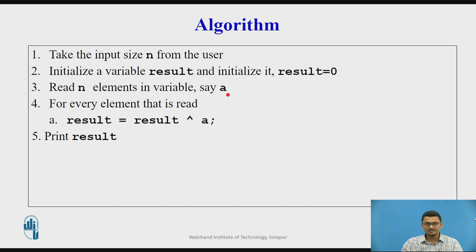The program reads n elements and one by one the elements will be read. For example, we are reading the element and storing it in A. For every element that is read, we perform XOR operation along with the previous result and then store it in result. Finally, when all the n elements are read and processed with the XOR operation, we print the result.